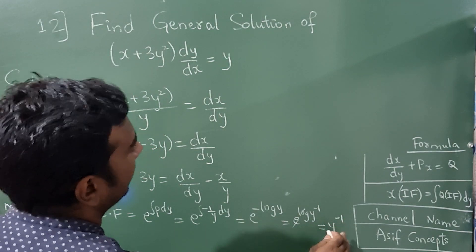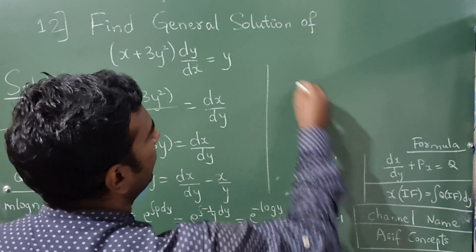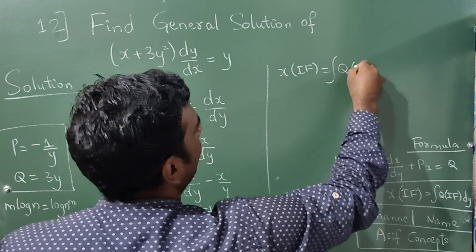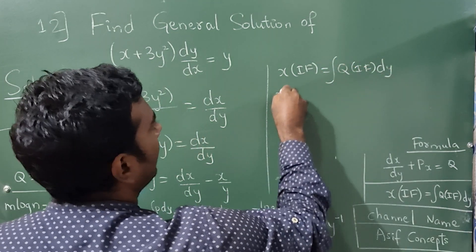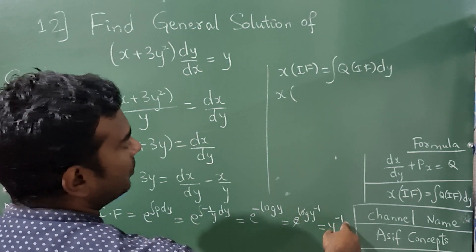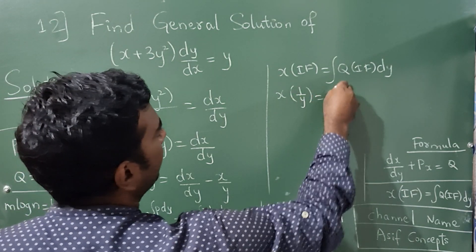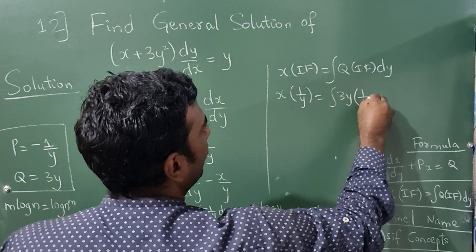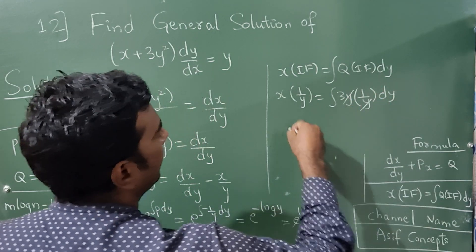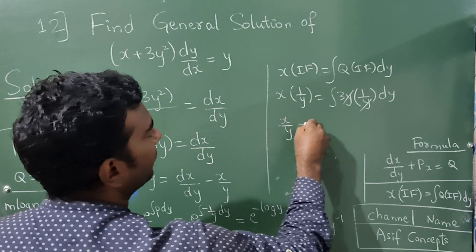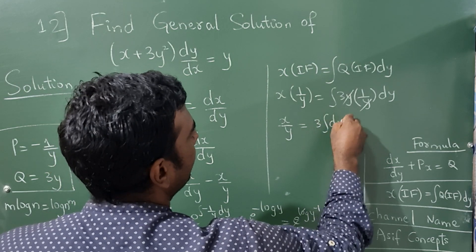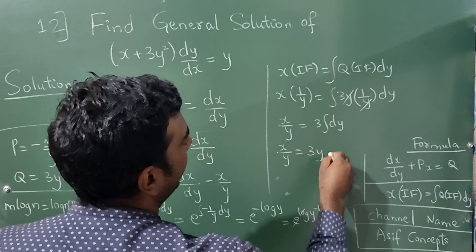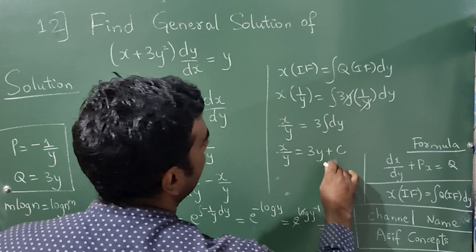Now apply the formula: x × (integrating factor) = ∫Q × (integrating factor) dy. The integrating factor is y^(−1) = 1/y. So: x × (1/y) = ∫3y × (1/y) dy. The y cancels, giving x/y = ∫3 dy = 3y + c. This is the final answer.